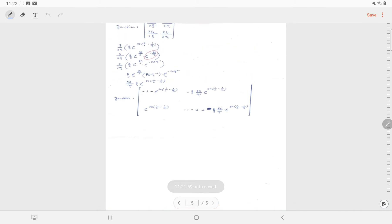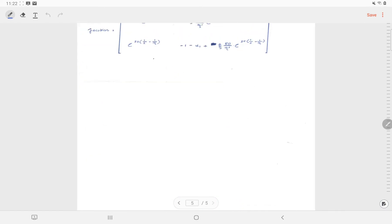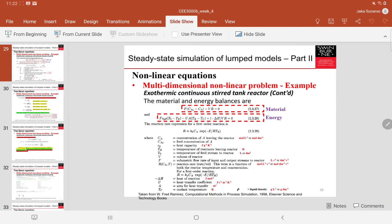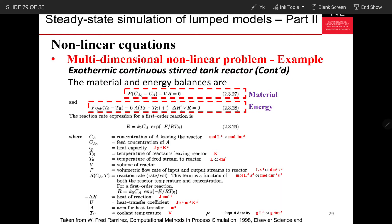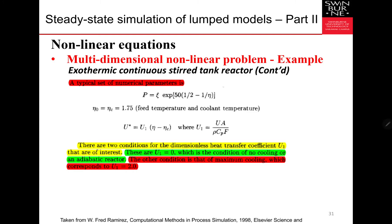Once we have those equations, we can derive the Jacobian for these two functions. The Jacobian is given here, with derivatives shown in the same way as the previous example. With the material and energy balance and the dimensionless parameters, we set typical numerical parameter values: 50 and 0.5 for some parameters, and 1.75 for the other two variables.